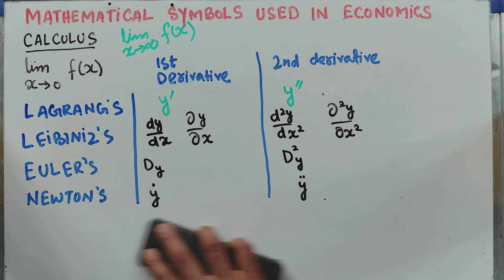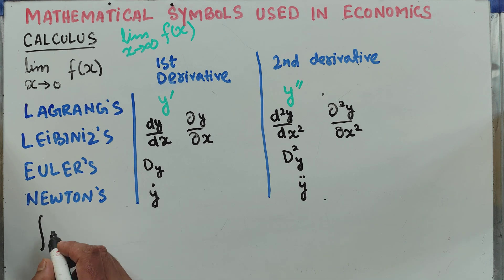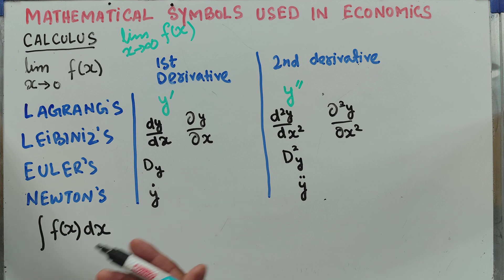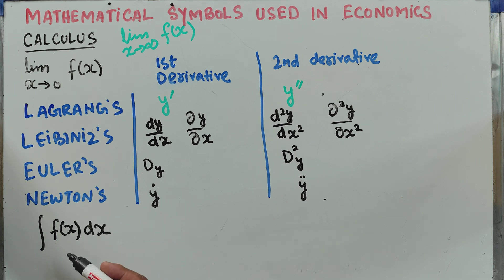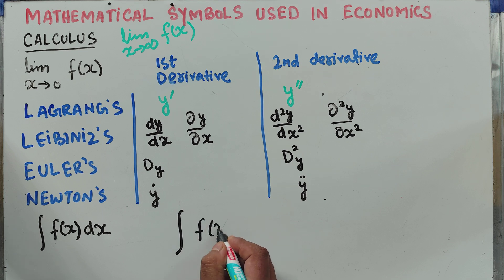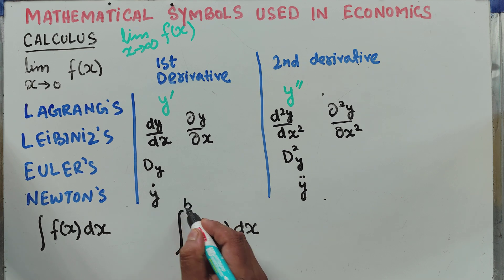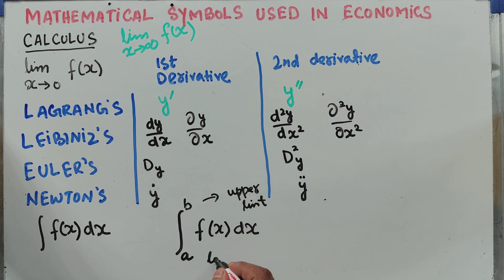Let us look at other symbols we often come across. From integral calculus, we have the indefinite integral of a function f of x with respect to x. I have made videos explaining all of these. Then we have the definite integral of a function f of x with respect to x, where x ranges from a to b — a is the lower limit and b is the upper limit.